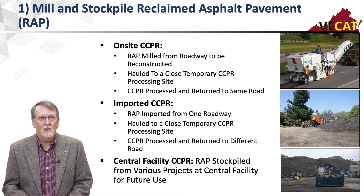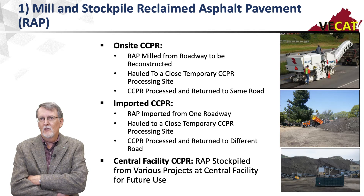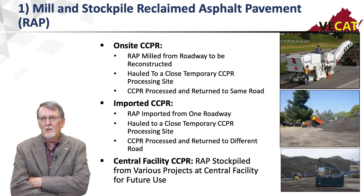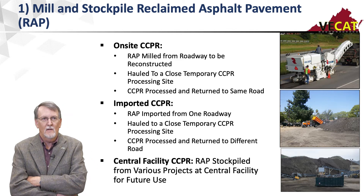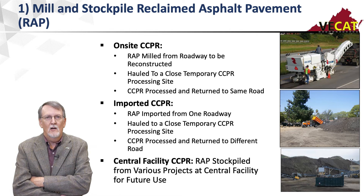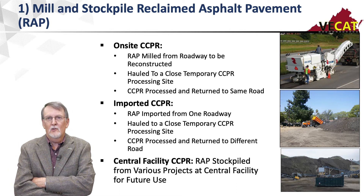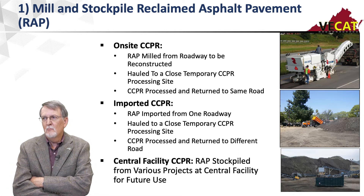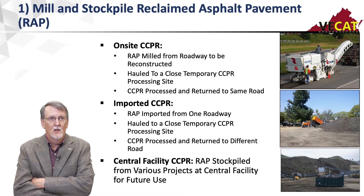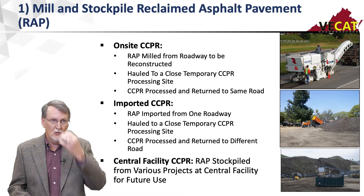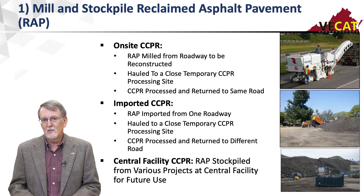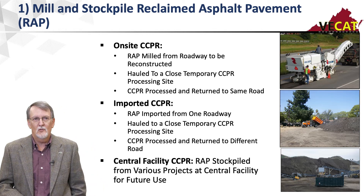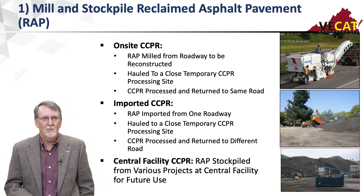CCPR breaks down into three categories. The first is on-site, where RAP is milled from the roadway to be constructed, hauled to a close temporary site, processed, and returned to the same road. This has been used in conjunction with cold in-place recycling — for example, milling off the top three to four inches of thermally cracked pavement, hauling it to a central location, doing cold in-place recycling, then hauling the CCPR mix back, placing it, and putting an overlay on top. The second type is imported CCPR, where RAP from one roadway is taken to a temporary site and placed on a different project.